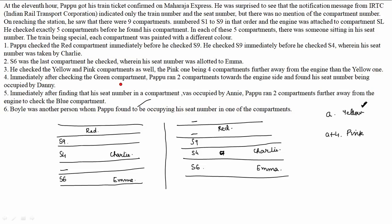The next condition: immediately after checking the green compartment, Pappu ran two compartments towards the engine and found his seat number being occupied by Danny. If we assume the green compartment is at position B, then Danny is found at position B minus 2 (towards the engine). This is a variable condition that leads to multiple cases.